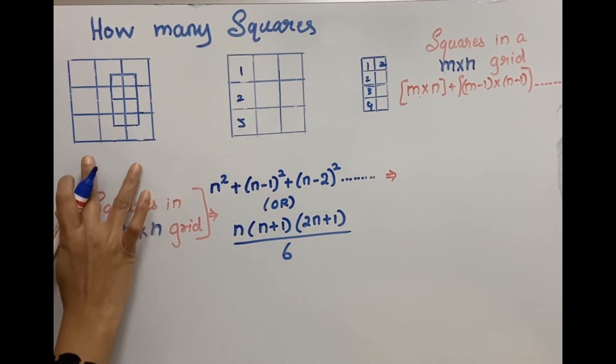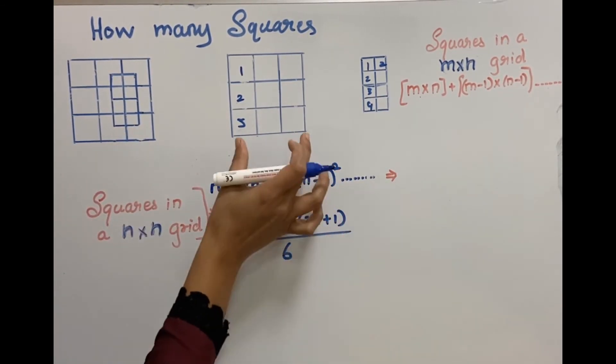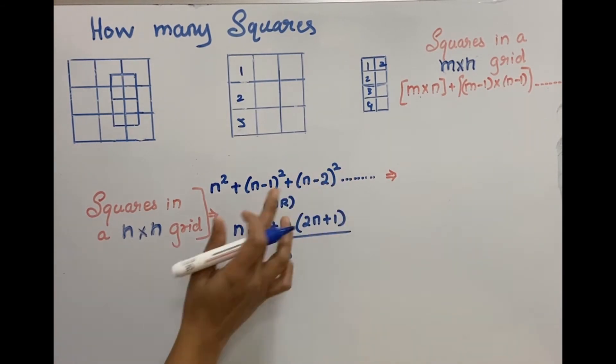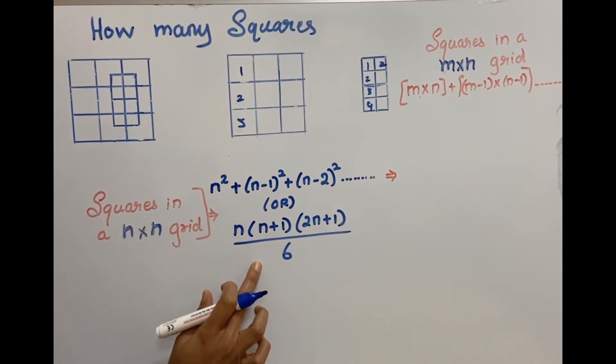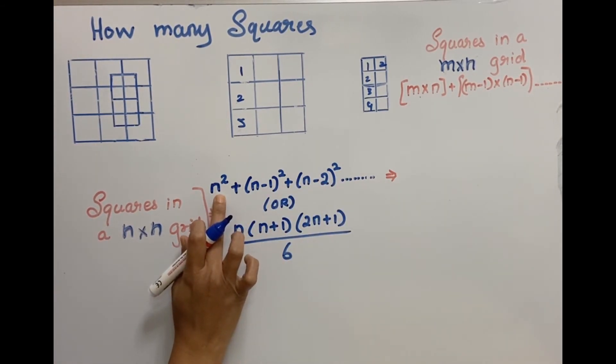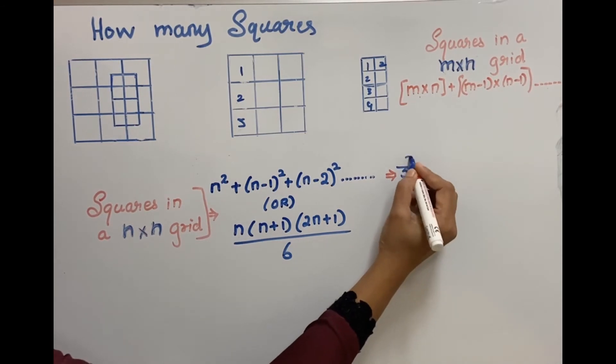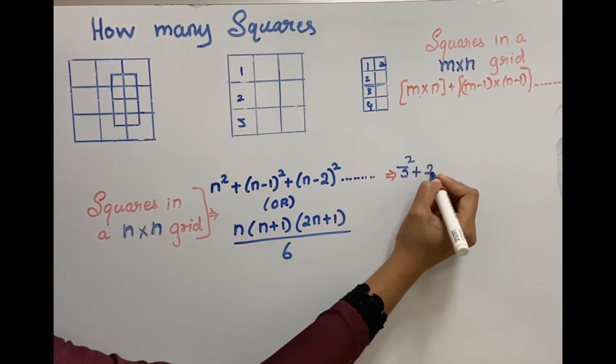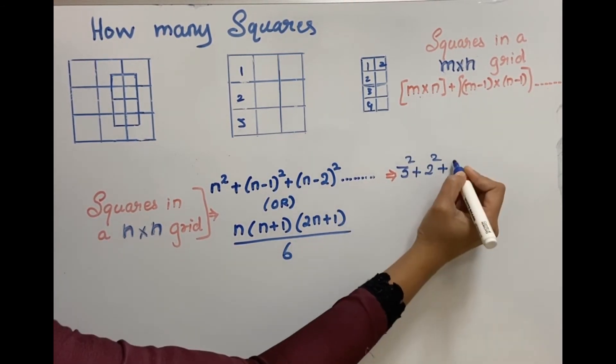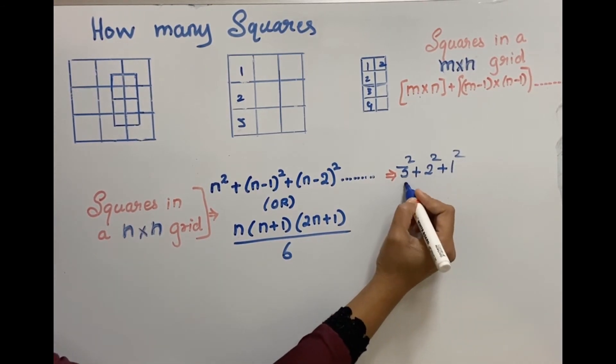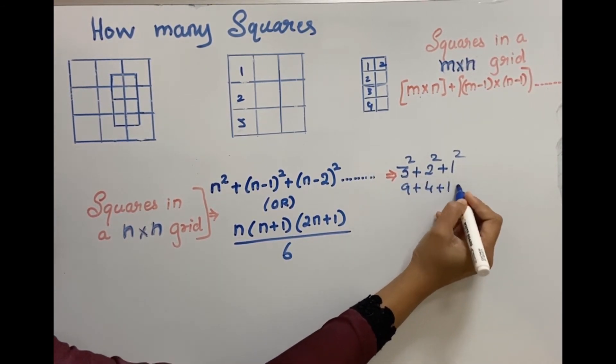Squares in this picture, let's take the outer part. First, the squares in this 3 into 3 grid can be found either by this formula or by this formula. By this formula first, n is 3 square, n minus 1, then n minus 2. So once we reach 1, stop.